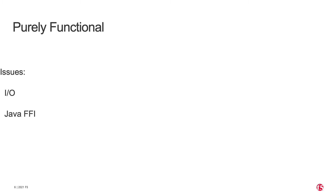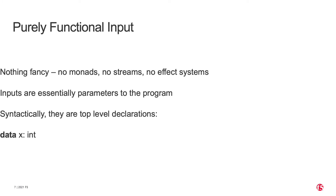DEX is purely functional. There are some classic issues around I/O and the foreign function interface, but we don't do anything very fancy — there are no monads, streams, or effect systems, nothing you'd see in a full-blown academic functional language. Things are a lot simpler. We view the inputs as parameters to the program: a DEX program gets a set of inputs when it runs, and they're not going to change, so we can keep things referentially transparent. Syntactically they don't look like parameters; there are data declarations where you declare a variable and give its type, and an extra-linguistic mechanism binds that variable, just like passing in a parameter.